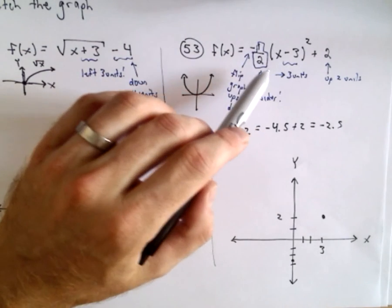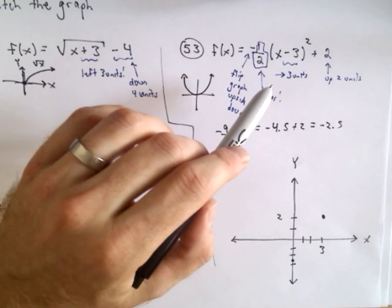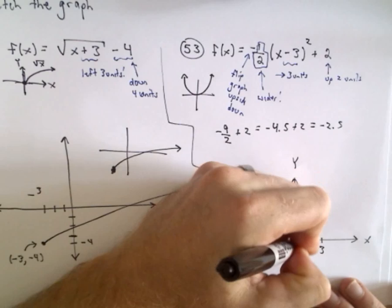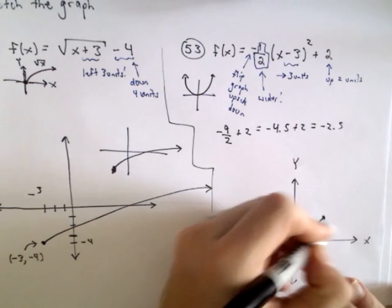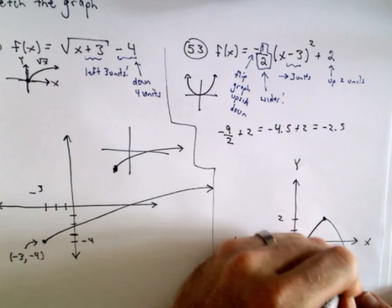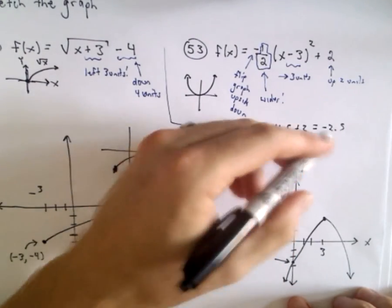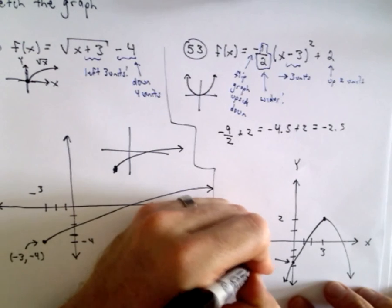You could always find the x-intercept by setting all of this equal to zero and solving. I'm going to be a little bit lazy here and not do that, so you can check my graph. But it's just going to be a parabola that opens downwards. Again, that's going to be the point (0, -2.5) or negative five halves.